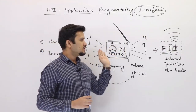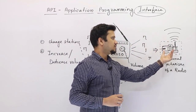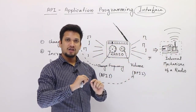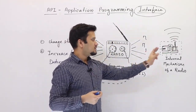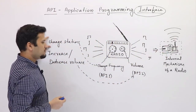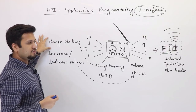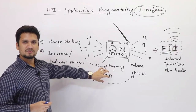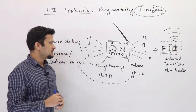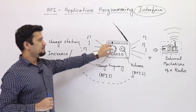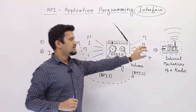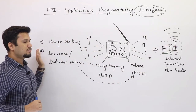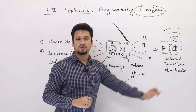Now imagine if you did not have simple knobs and instead had to go and change the wire inside to achieve a certain frequency. It would be very difficult for the user to adapt to change. If some other radio comes with different wiring, you would have to understand how to change the wiring in that system. So API shields from such changes. In short, API provides a simple means to access the resource which the system has, without the user bothering about how this system has been built.